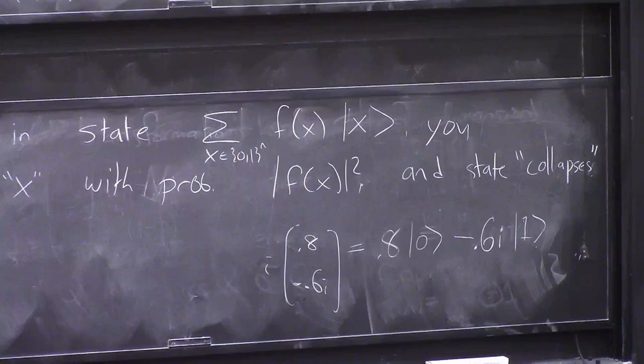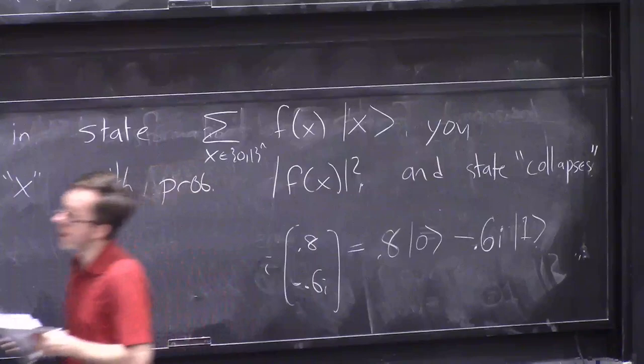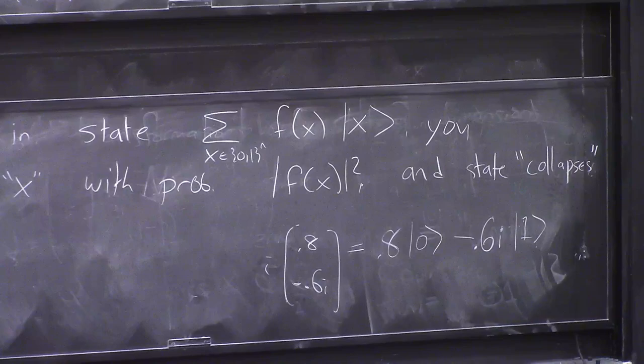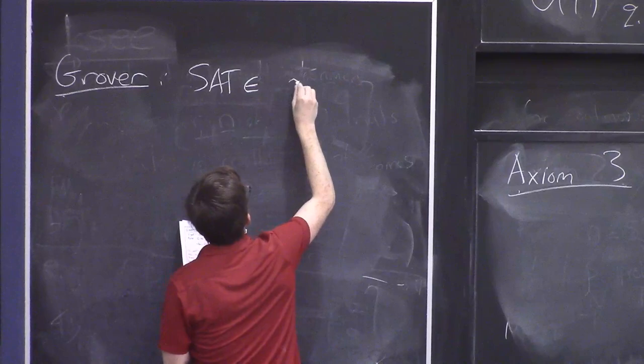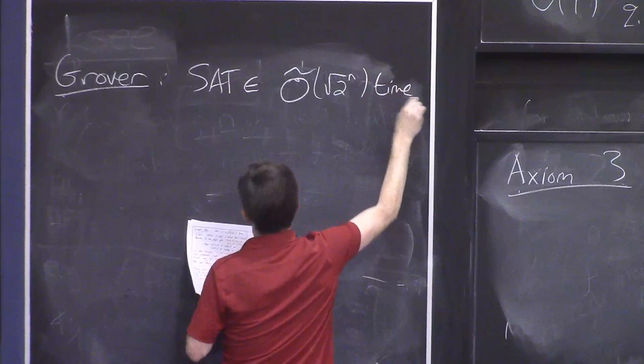So now you know everything there is to know about quantum computation. I'll tell you how Grover's algorithm works, which as I said before, I think a good way to think about it is it solves the SAT problem in something like square root of 2 to the power of n time. So this is SAT in about O-tilde of root 2 to the n time.